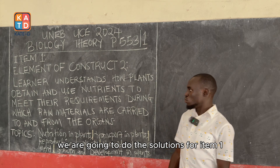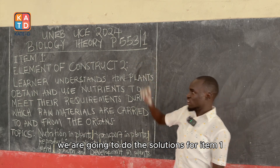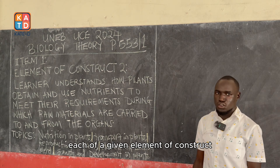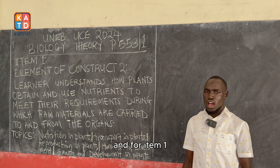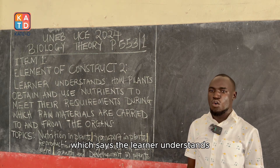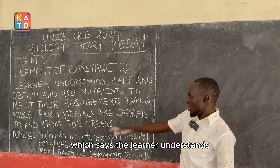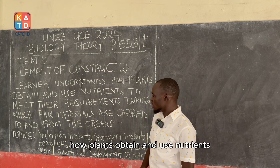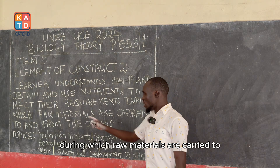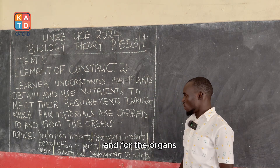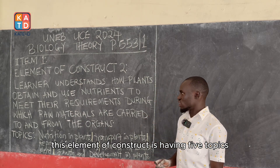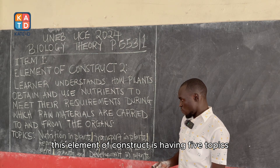For today, we are going to do the solutions for item 1. All items come from a given element of construct. For item 1, it comes from element of construct 2, which says the learner understands how plants obtain and use nutrients to meet their requirements, during which raw materials are carried to and from the organs.